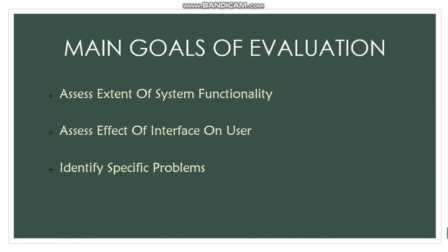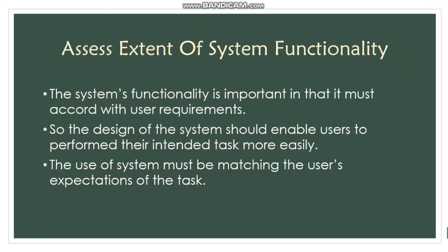Evaluation has 3 main goals. The first is to assess the extent of system functionality. The second is to assess the effect of the interface on the user. The third is to identify specific problems. For the first goal, system functionality is important in that it must account for the user requirements.